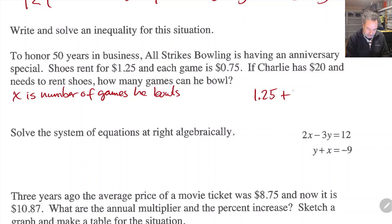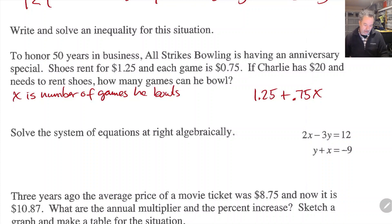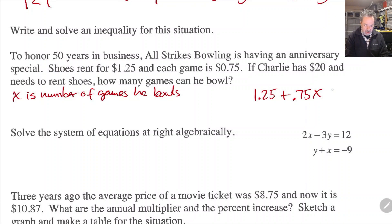I know he has to rent shoes, so that's $1.25, and every single game is 75 cents, so plus 0.75 times x. When I add those up, $1.25 plus 0.75 times x has to be less than or equal to $20, since it can be no more than $20.